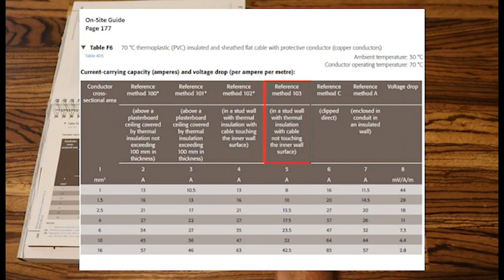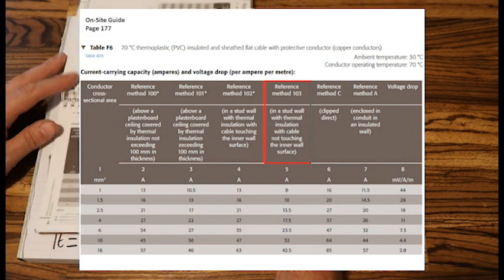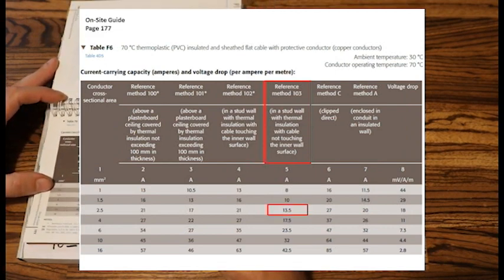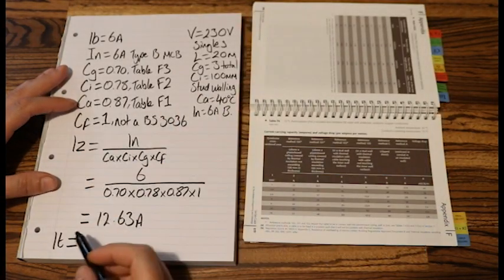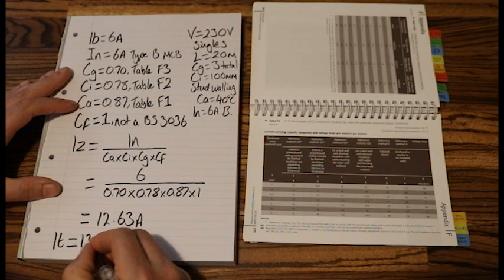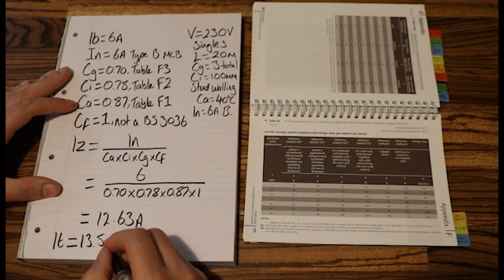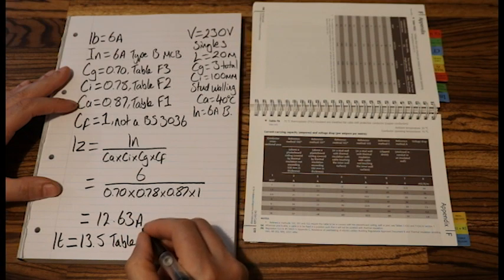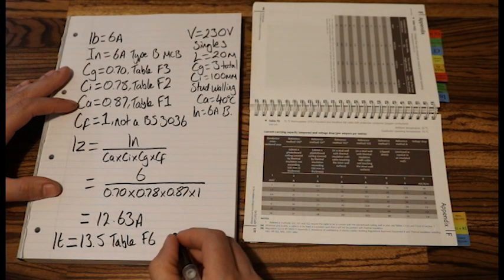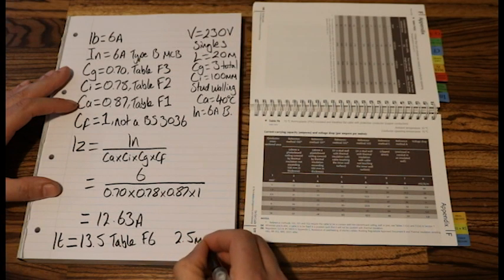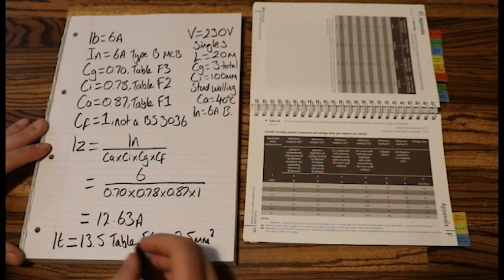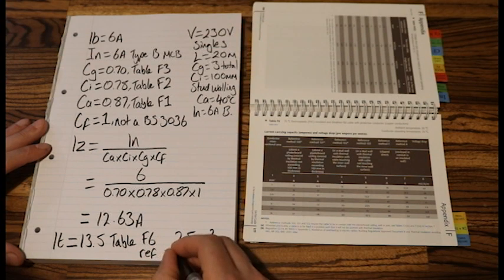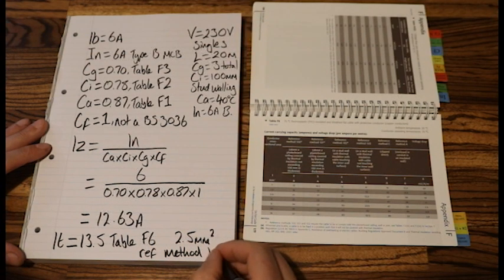And we need 12.63 or above. And I've got 13.5. Go to column 1. And that tells me that is 2.5mm cable. So let's write that down. So our IT was 13.5. And that was table F6. And that was 2.5mm cable. Now I'd make a little note of that, of reference method 103.